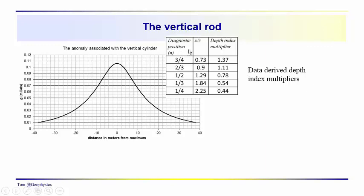For the value of x over z where the anomaly drops to three quarters, one half, one quarter: 0.73, 1.29, 2.25, and remember the depth index multipliers that we multiply times the values of x at these positions. These depth index multipliers then give us the depth to the anomaly source.